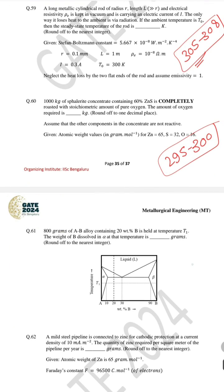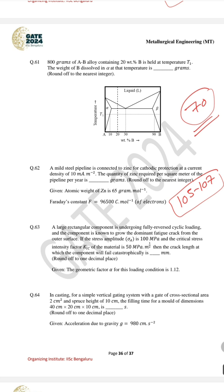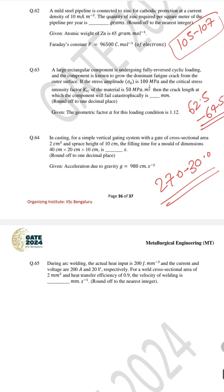For question number 61 the correct answer is 70. For question number 62 the correct answer is from 105 to 107. For question number 63 the correct answer is between 62.5 and 64.5. For question number 64 the correct answer is from 27.0 to 30.0. The last question's correct answer is 9.